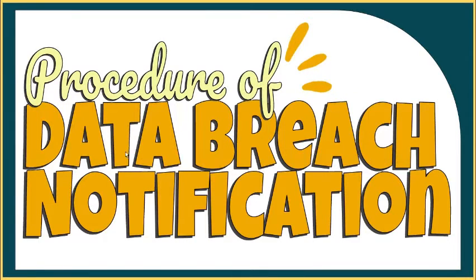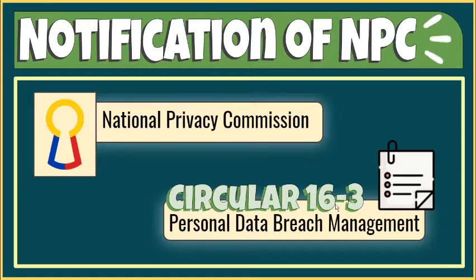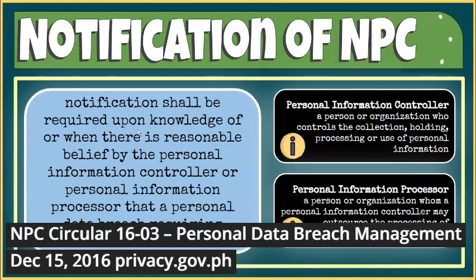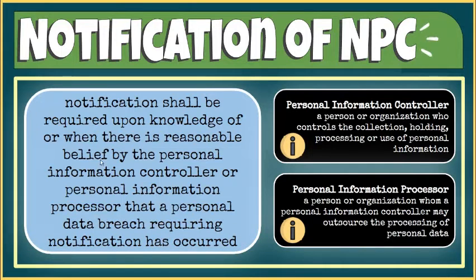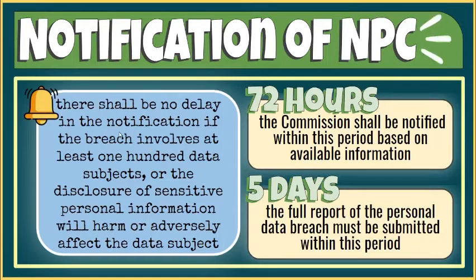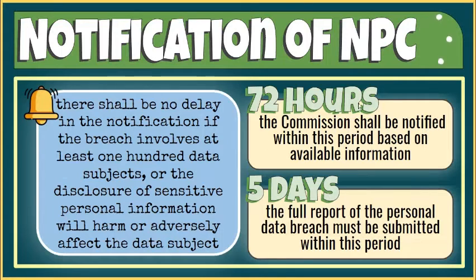Let's talk about the guidelines in notifying the National Privacy Commission about a personal data breach. NPC Circular 16-3 provides the guidelines for personal data breach management. It states that notification shall be required upon knowledge of, or when there is reasonable belief by the personal information controller or personal information processor, that a personal data breach requiring notification has occurred. There shall be no delay in notification if the breach involves at least 100 data subjects or the disclosure of sensitive personal information will harm or adversely affect the data subject. In both instances, the commission shall be notified within the 72-hour period based on available information. The full report must be submitted within five days unless the personal information controller is granted additional time by the commission to comply.